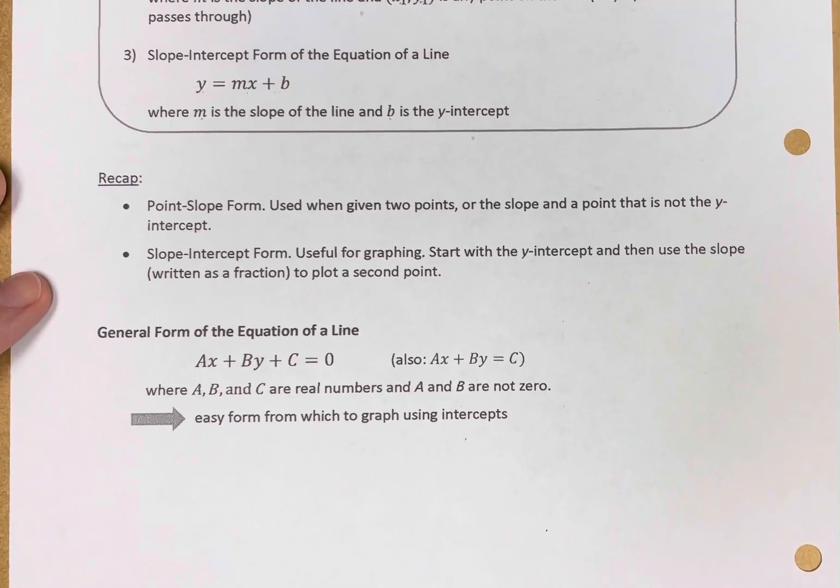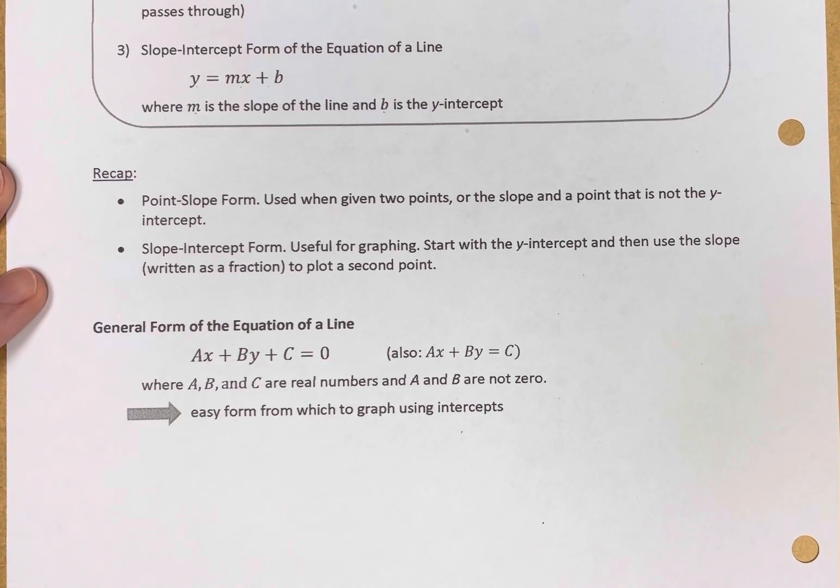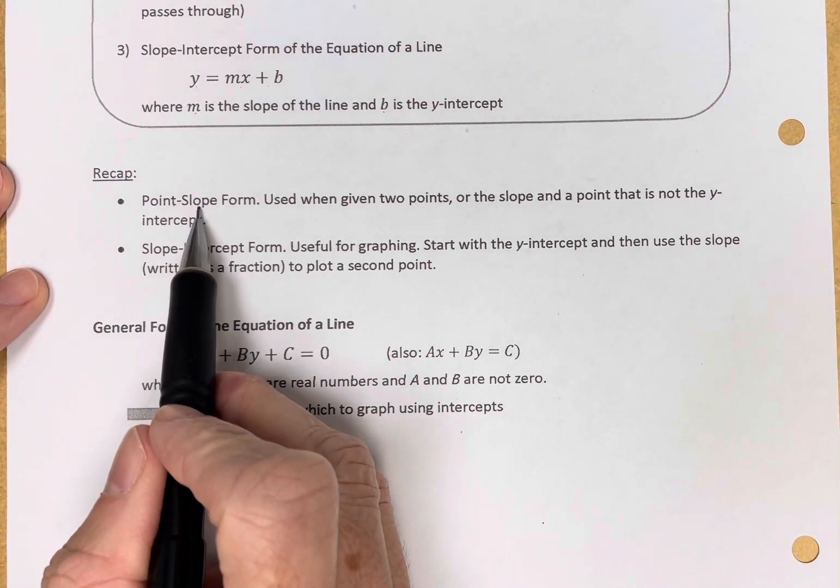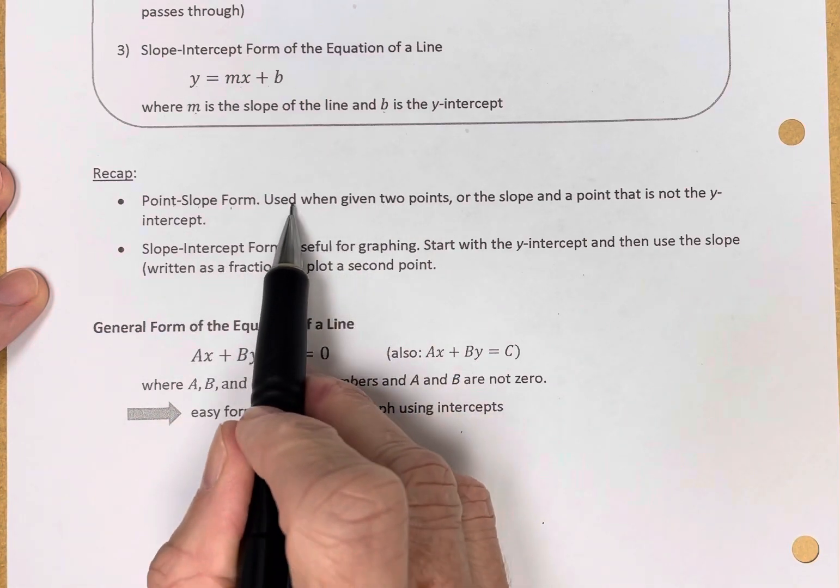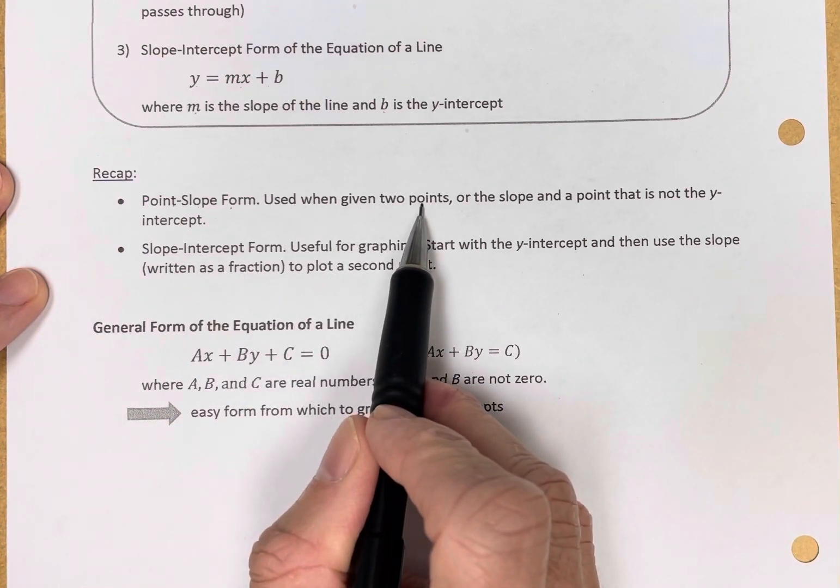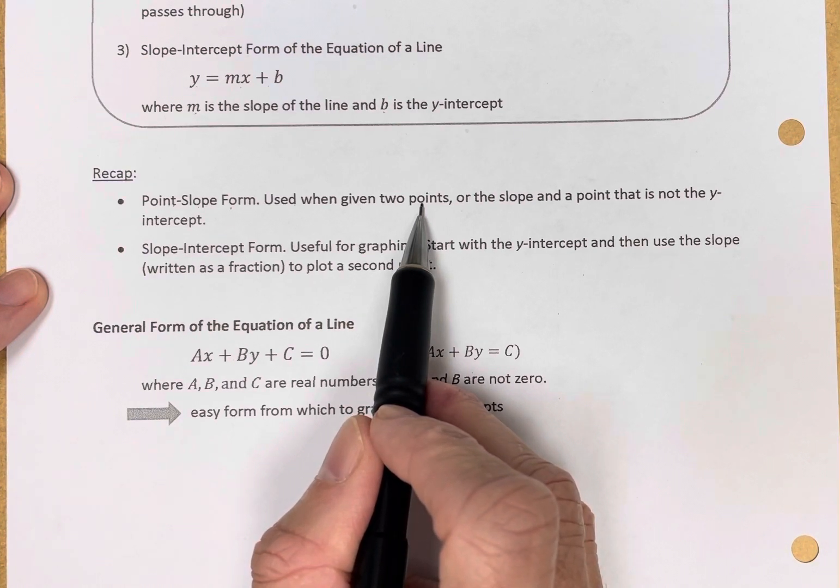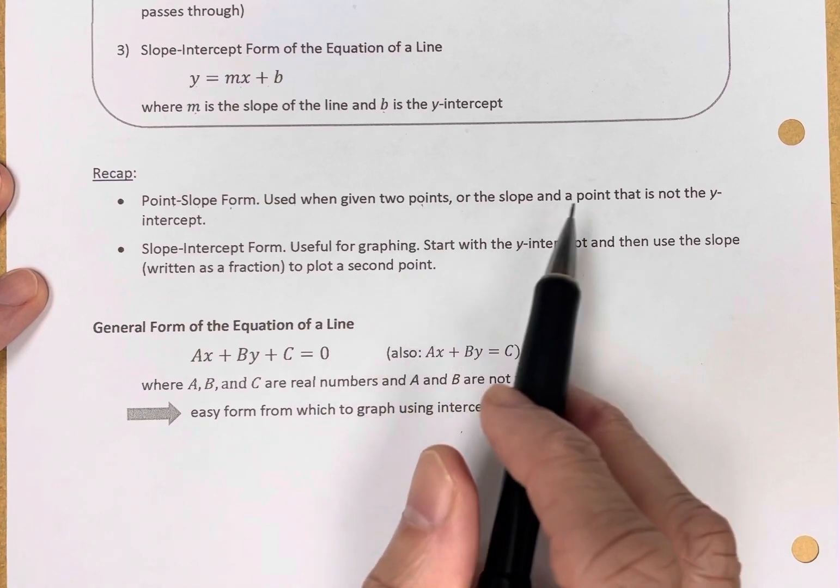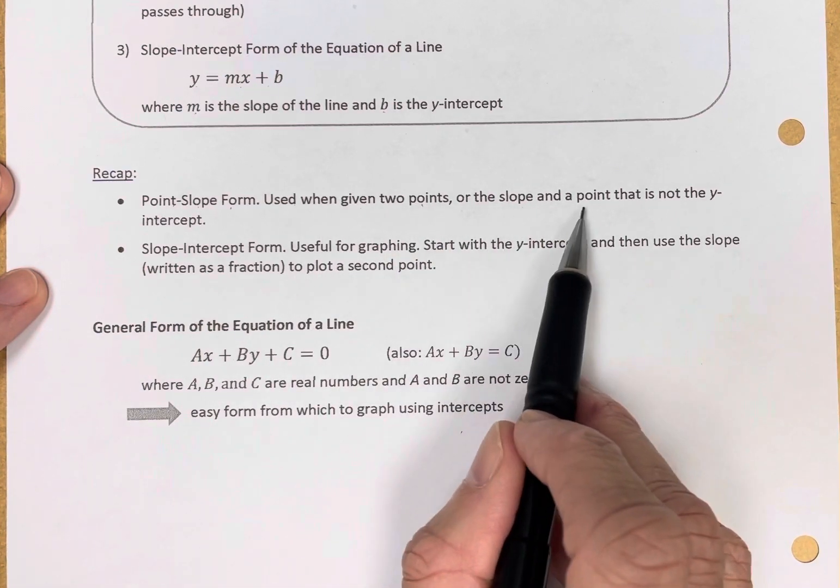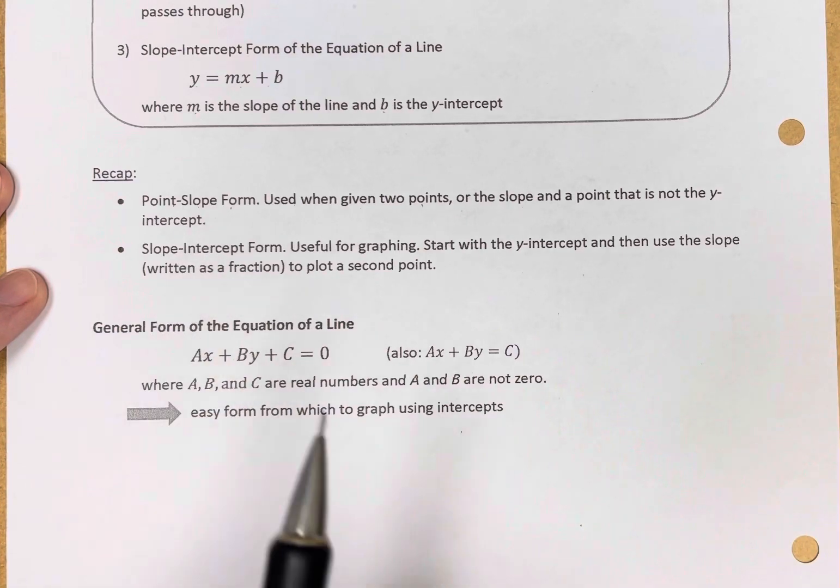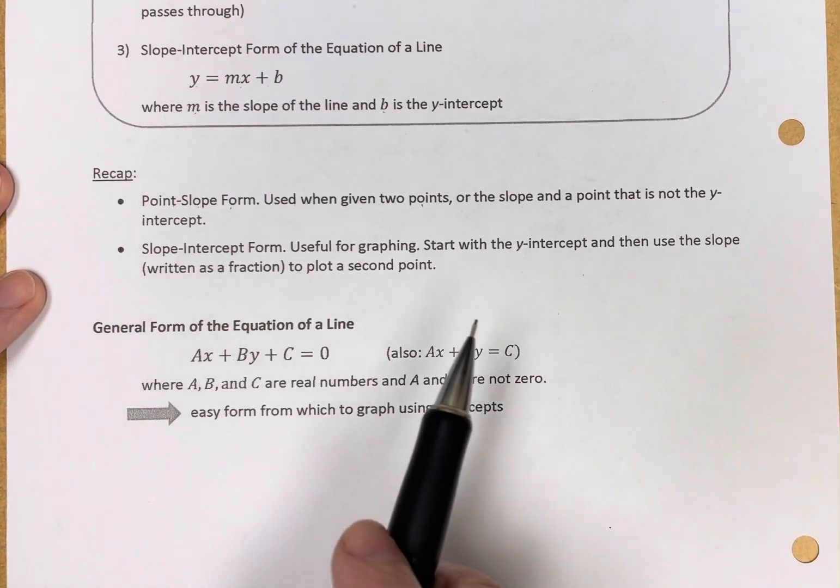Let's recap what we've done. Point-slope form is used when given two points. You're given two points, you can quickly find the slope, and then you can put it into point-slope form. Or, if you're given the slope and a point that is not the y-intercept, you can use the point-slope form.